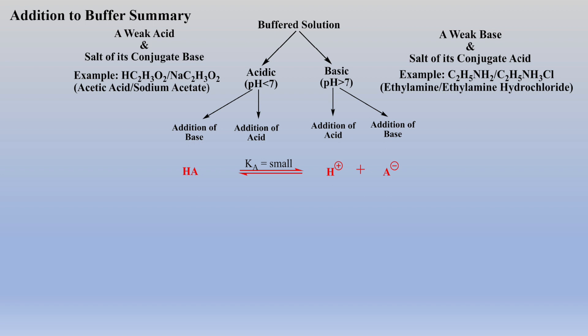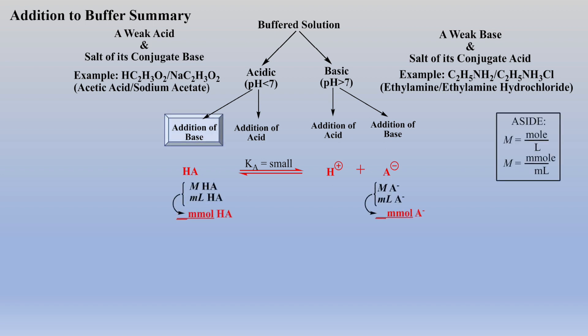Starting with an acidic buffered solution, let's add some base. Typically, we would be given the molarity and volume of both components within the acidic buffered solution, which we'd convert to millimoles. Now, if we are going to add base, it will react with the acidic proton of the weak acid in a neutralization reaction, thereby lowering the concentration of weak acid and increasing the concentration of conjugate base.